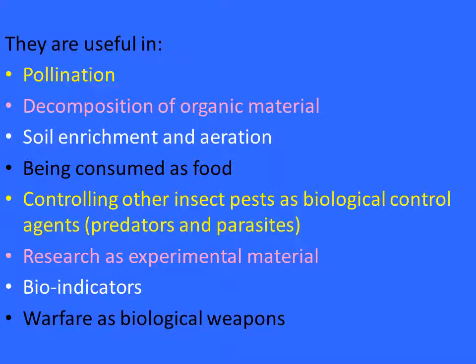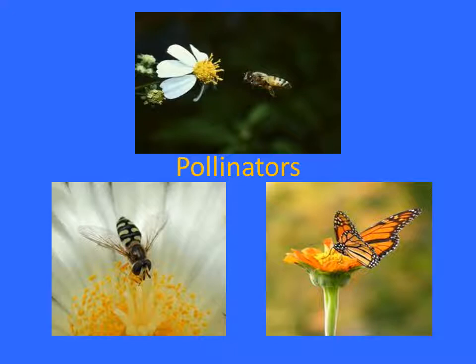Moving on to the importance or significance of insects, they are useful in pollination, decomposition of organic material, soil enrichment and aeration, being consumed as food, controlling other insect pests as biological control agents in the form of predators and parasites, as experimental material in research, as bio indicators, and in warfare as biological weapons.